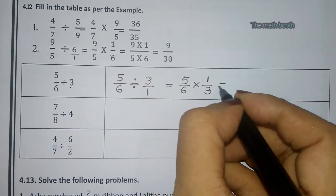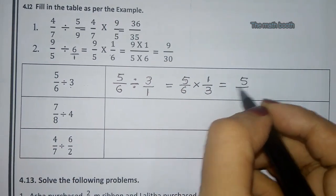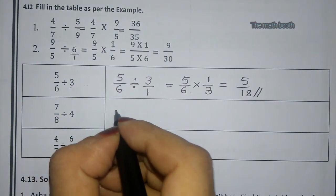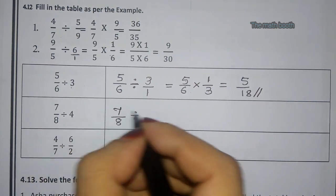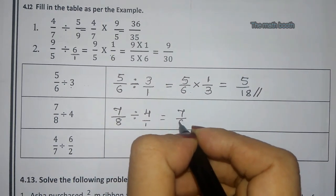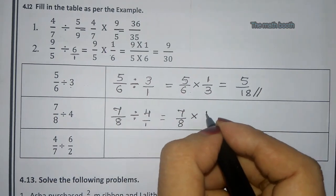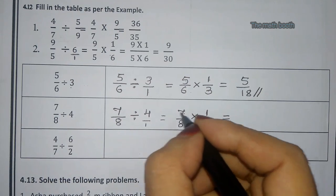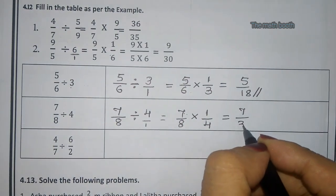For 7/8 divided by 4: we keep 7/8 as it is, the divide becomes multiply, and 4/1 becomes 1/4. So we multiply the numerators: 7 × 1 = 7, and the denominators: 8 × 4 = 32. The answer is 7/32.